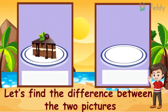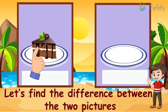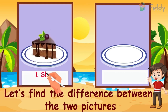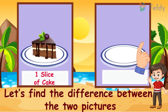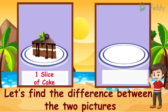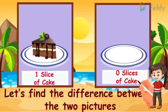Let's find the difference between the two pictures. Let's count the number of cake slices on the plate. One slice of cake. Then look at this picture. Zero slices of cake.